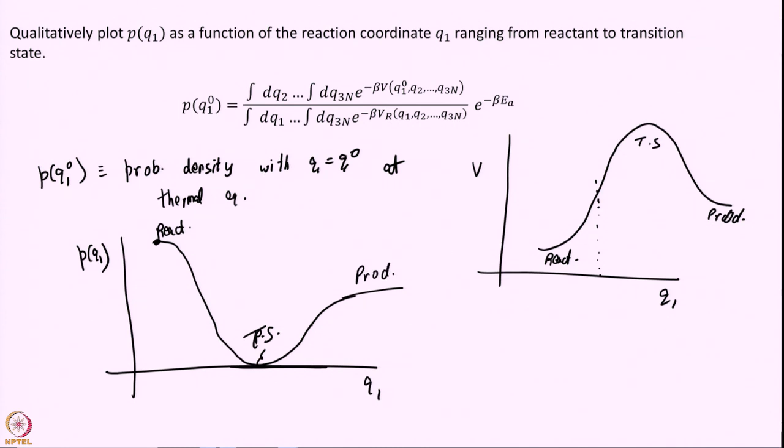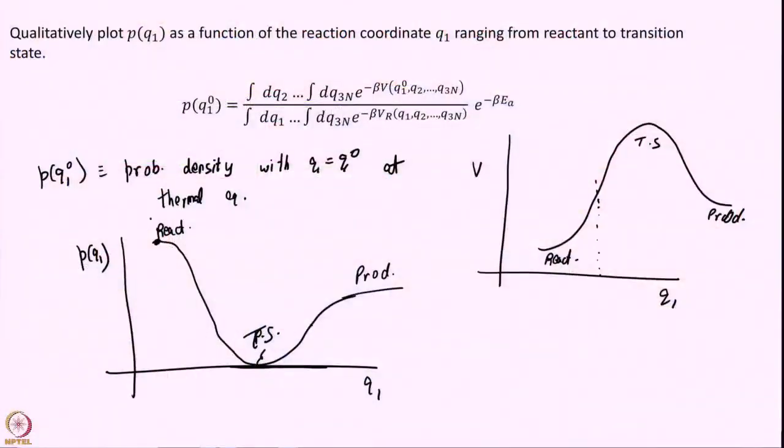Once more, why? Because the transition state is at a much higher energy. Therefore, at thermal equilibrium, it is much less likely for me to be present there. I am much more likely to be the reactant. So that is why I must go from reactant to transition state in this fashion. I have drawn the product version as well corresponding to this, but that was not part of the question.